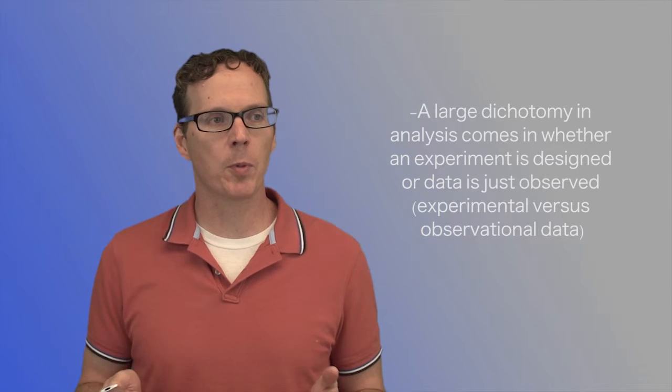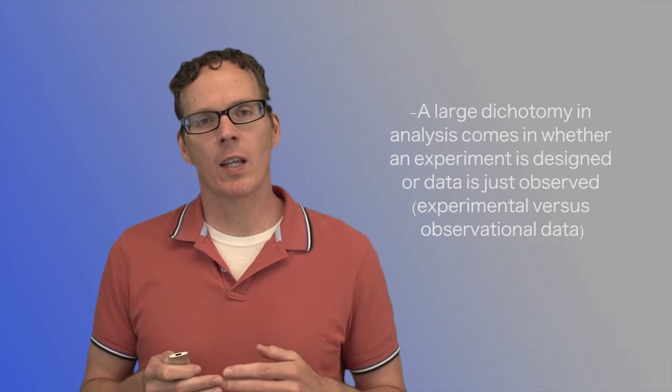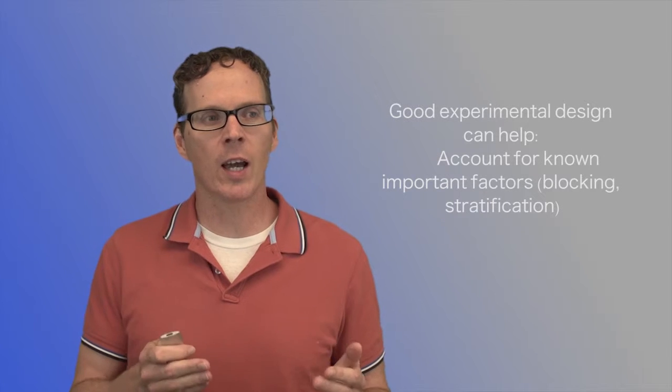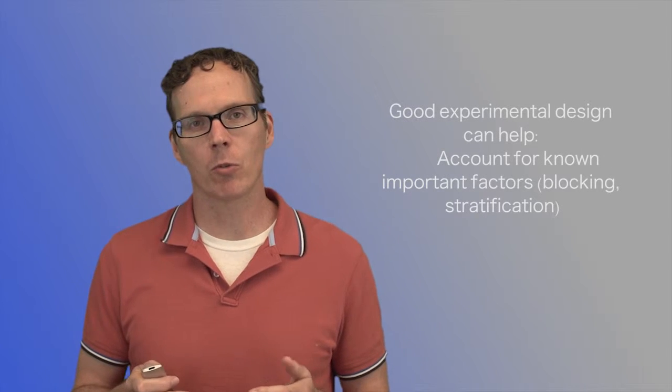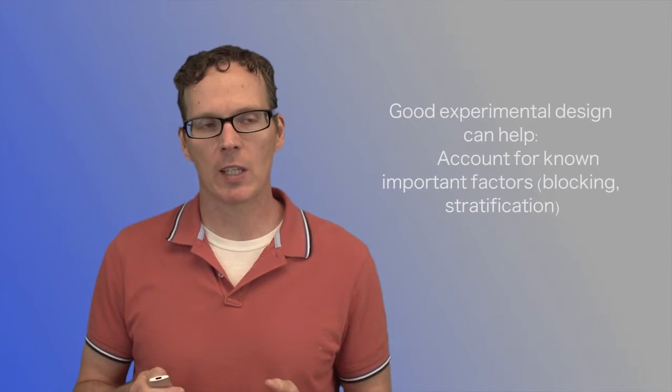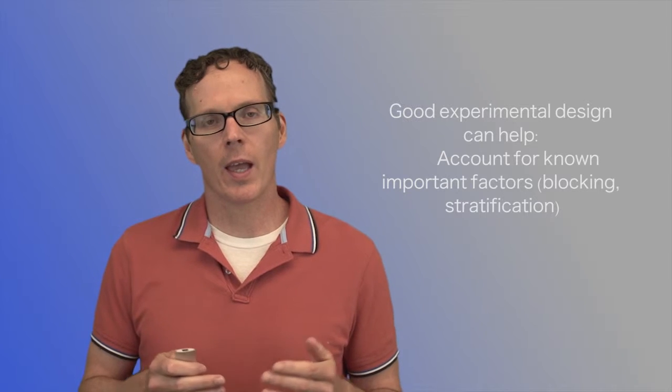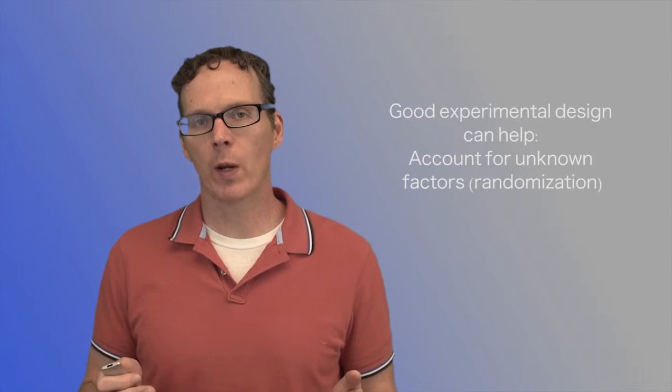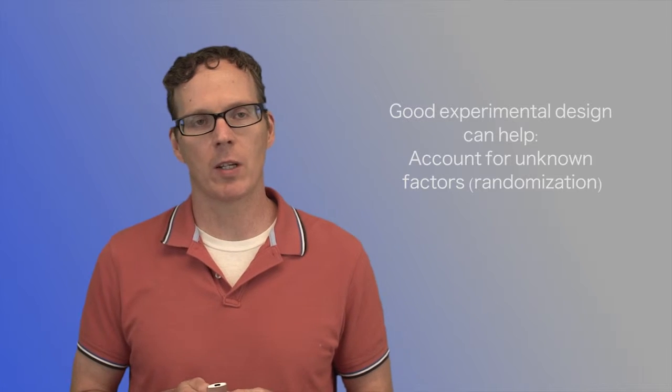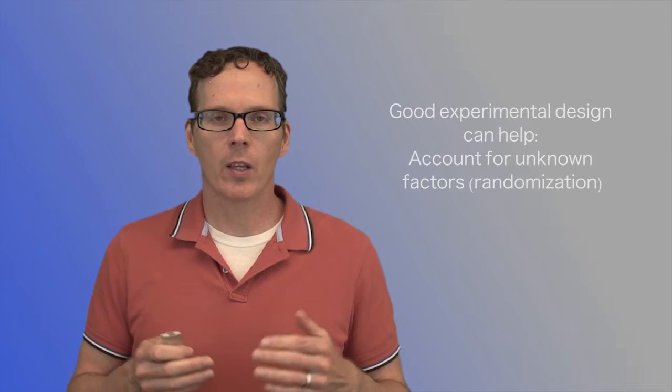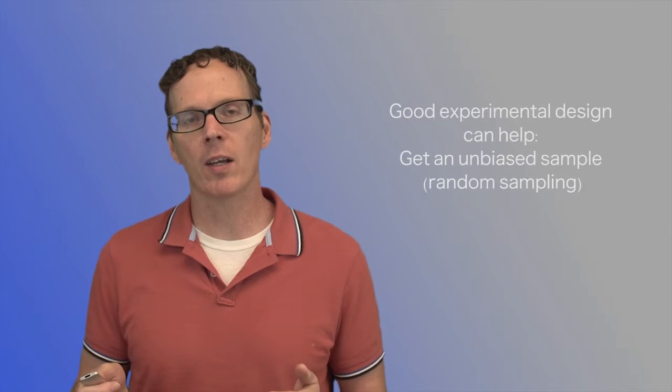Good experimental design can do things like account for known important factors through things like blocking and stratification. In addition, it can account for unknown factors through randomization. We'll have an entire lecture on randomization. Experimental design in terms of getting a good sample via random sampling can help us get an unbiased sample for extrapolating to the population that we're interested in.